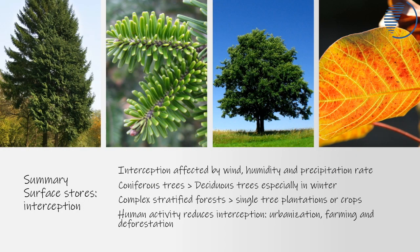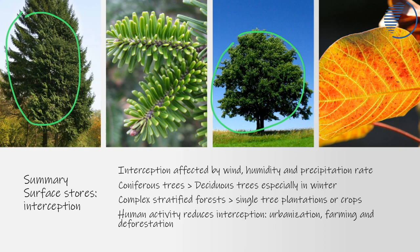In summary, interception is affected by wind, humidity, and precipitation. Coniferous evergreen trees are better at intercepting rainfall than deciduous trees. Complex stratified forests like tropical rainforests are much better at intercepting rain than soya or palm oil plantations. Human activity — including urbanisation, farming, and deforestation — all reduce interception.